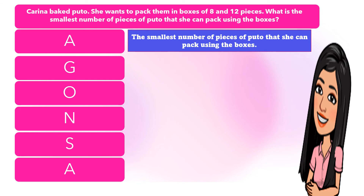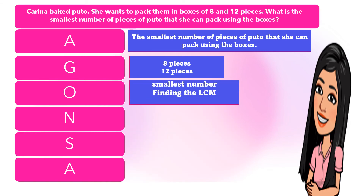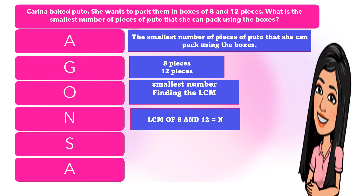This time we are going to find out the smallest number. A while ago we found the greatest number and used the GCF. When we use 'smallest number,' we are going to find out the LCM. We are given 8 pieces and 12 pieces of puto. The clue word is 'smallest number' — when we say smallest number, we find the LCM. When the answer sought is greatest number, use GCF. Since smallest number is what is given, we find the LCM. The number sentence is: LCM of 8 and 12 equals N.